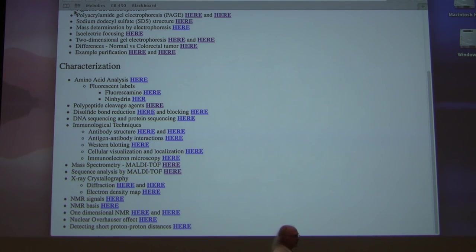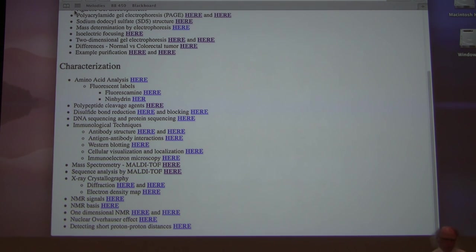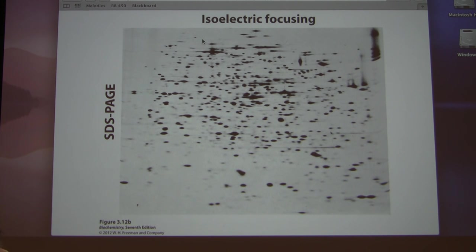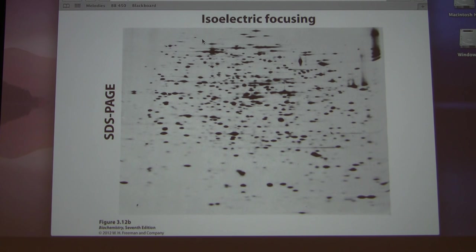Somebody asked me a question just before class started about the 2D gel I showed, and I wanted to clarify something. When I showed you that 2D gel plot, every protein in the mix showed up as a spot. But sometimes we don't want to see every protein — we may want to only flag where one particular protein is.